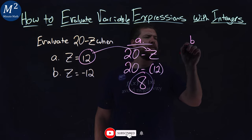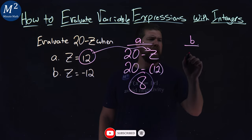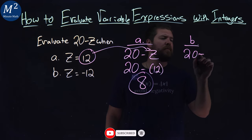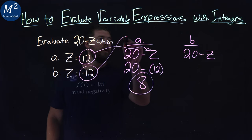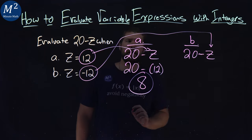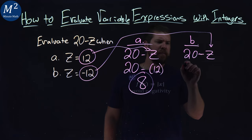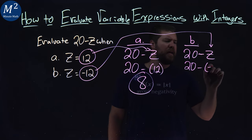But what happens with Part B here? I'm going to rewrite this 20 minus z. We're going to take the z value of negative 12 and plug it in for z. So 20 minus a negative 12.